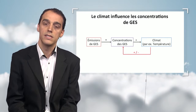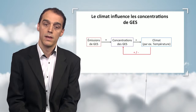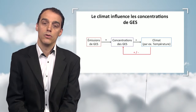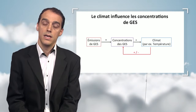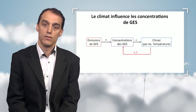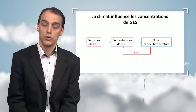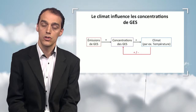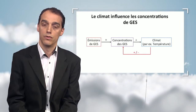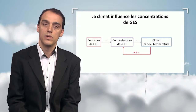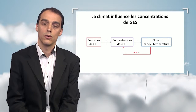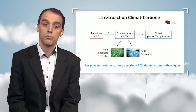I would like to demonstrate that the greenhouse effect gas system and the climate system are combined. The climate may directly influence the evolution of greenhouse effect gas concentrations. If the climate amplifies the impact of gases, there is a positive reaction — the more gases are emitted, the greater the concentration and the greater the climate changes. Otherwise, we could have a negative retroactive loop.